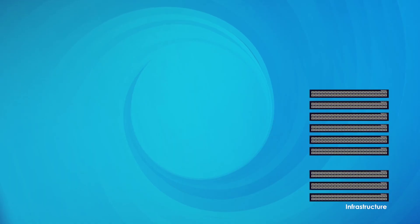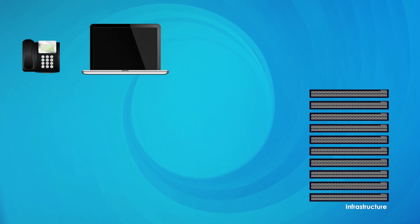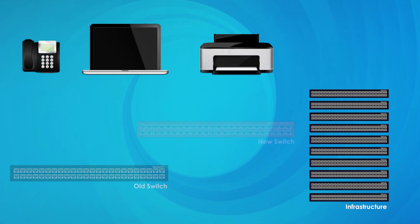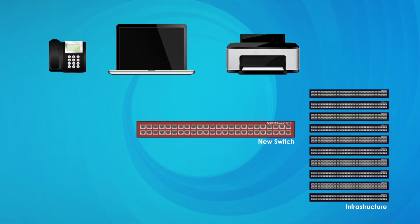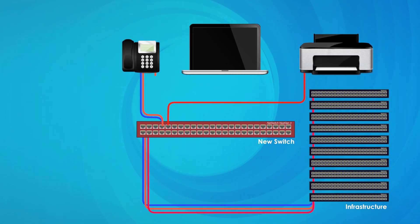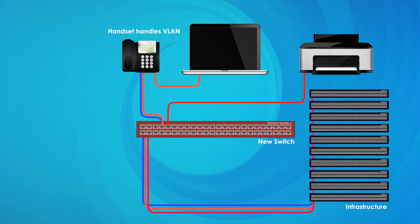Our network has many switches. Today, our organisation is moving these ports from here to here. We have VLANs for PCs, phones and printers, as well as two different switch types to contend with. First, let's look at some aspects of the manual process.